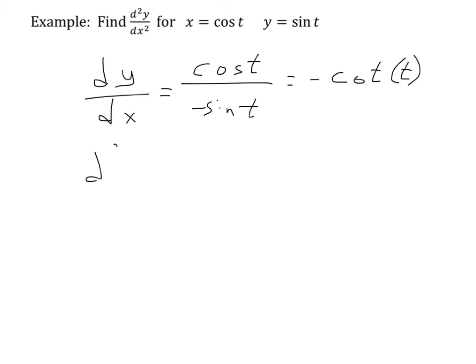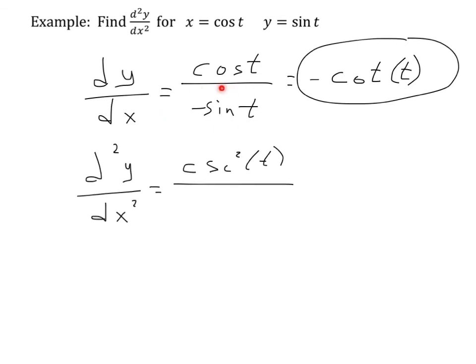Then, for the second derivative, d squared y dx squared, I'm going to have the derivative of this with respect to t. So, the derivative of negative cotangent is cosecant squared t over dx dt. And, it's actually kind of nice, because dx dt is always just sitting down here. So, I'm dividing by negative sine t.